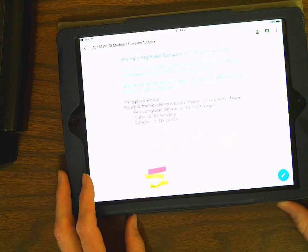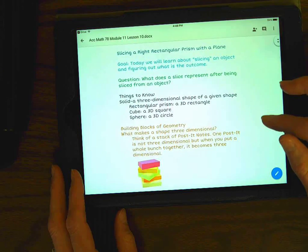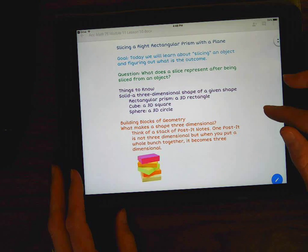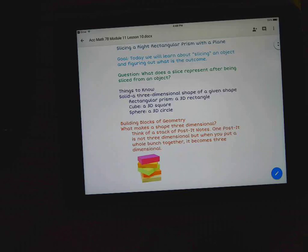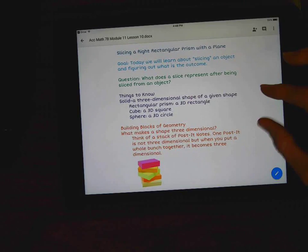The page numbers are going to start getting different because you have to determine how many pages you're going to use with the notes from the iPad. So I don't have a specific page number, but the name again is Slicing a Right Rectangular Prism with a Plane. So let's take out my iPad and take a look at this.